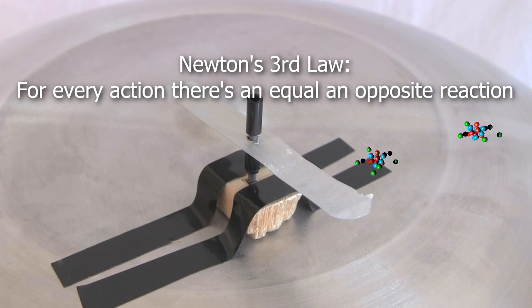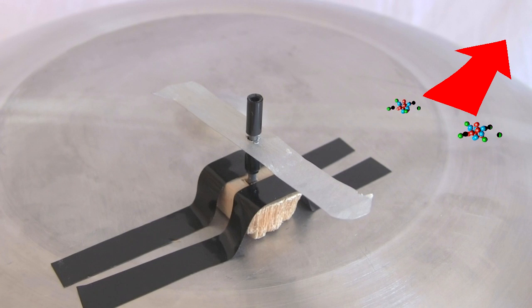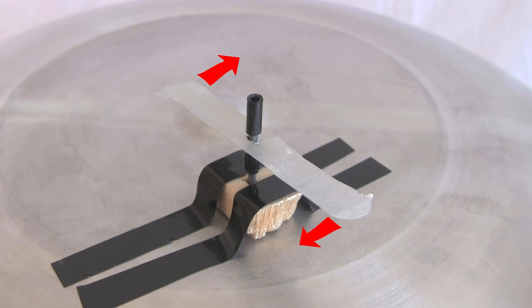Newton's third law says that for every action there's an equal and opposite reaction. So while the positive ions are repelled in one direction, the rotor moves in the opposite direction. And since both points are also facing in opposite directions, that causes the rotor to rotate around its center, the shaft. The ion wind is the jet of ions that are repelled away.